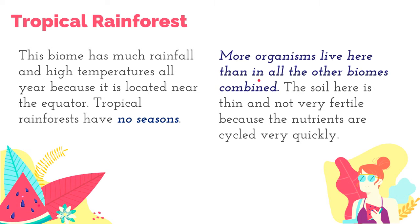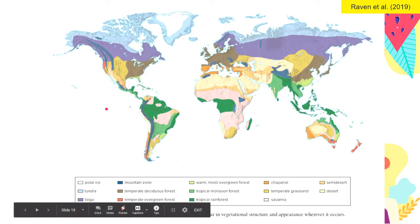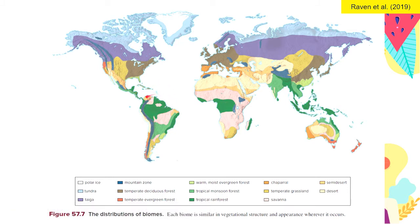They have very high biodiversity of organisms. However, the soil here is thin and not very fertile because the nutrients are recycled very quickly. This map shows us the distribution of biomes and we can find tropical rainforests in South America, Africa, some parts of Central Asia, Southeast Asia — and you can see here even the Philippines, whose major biome is tropical rainforest.